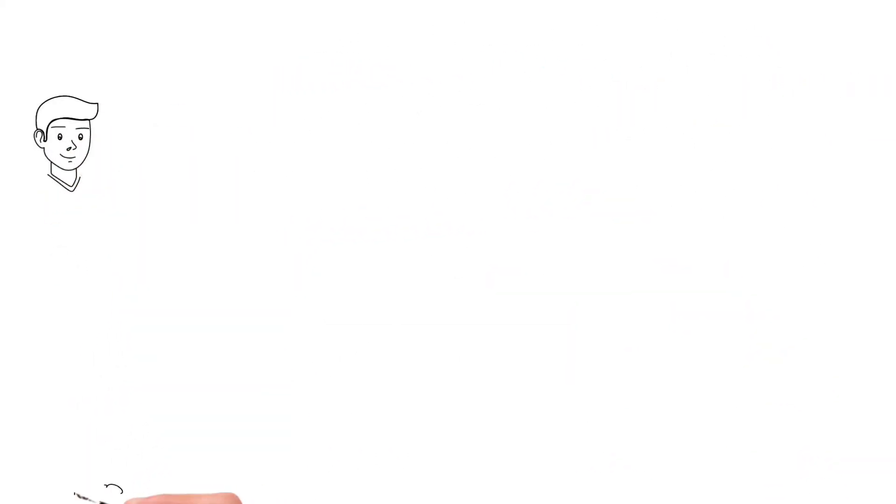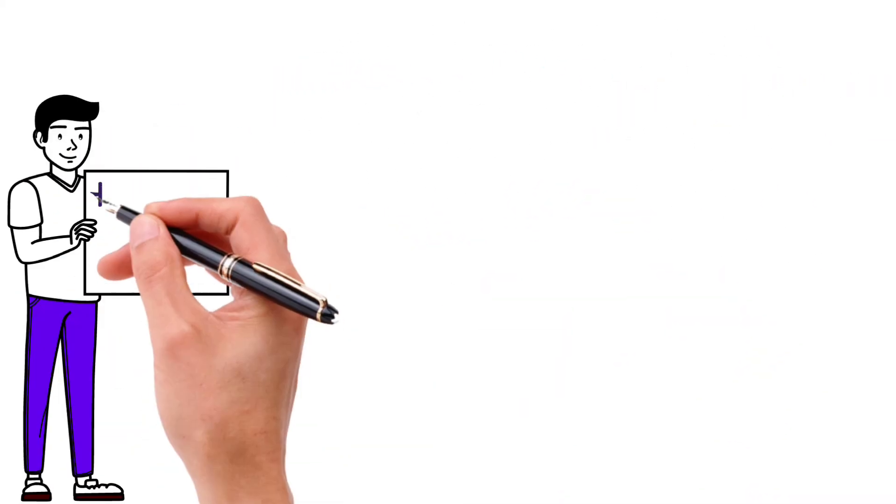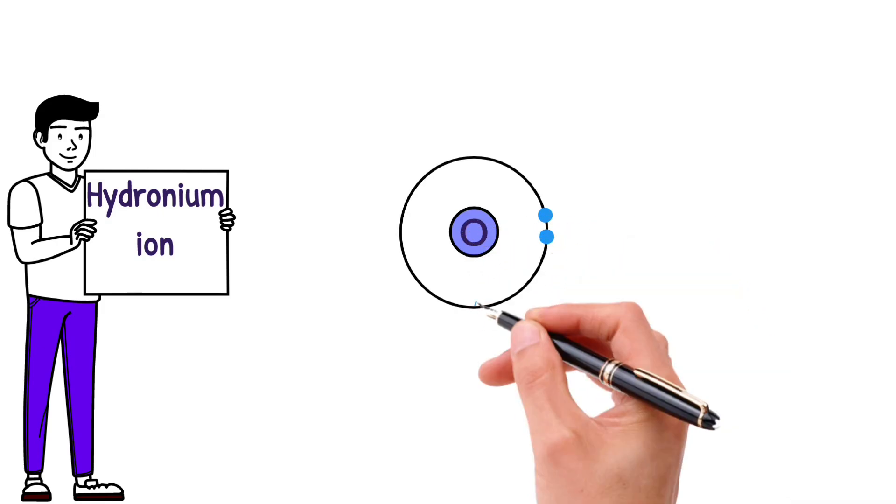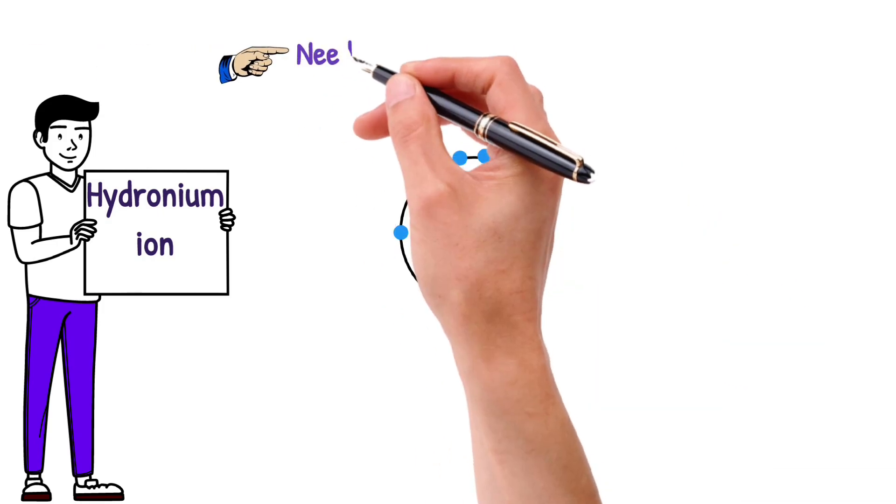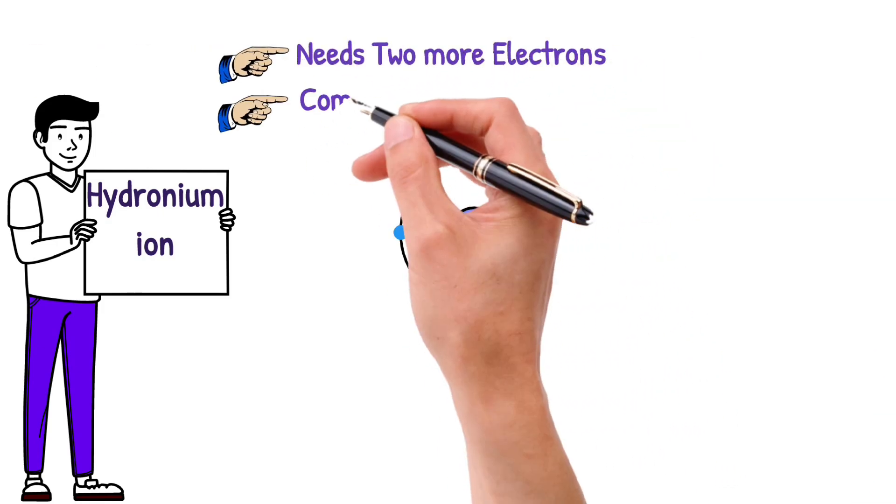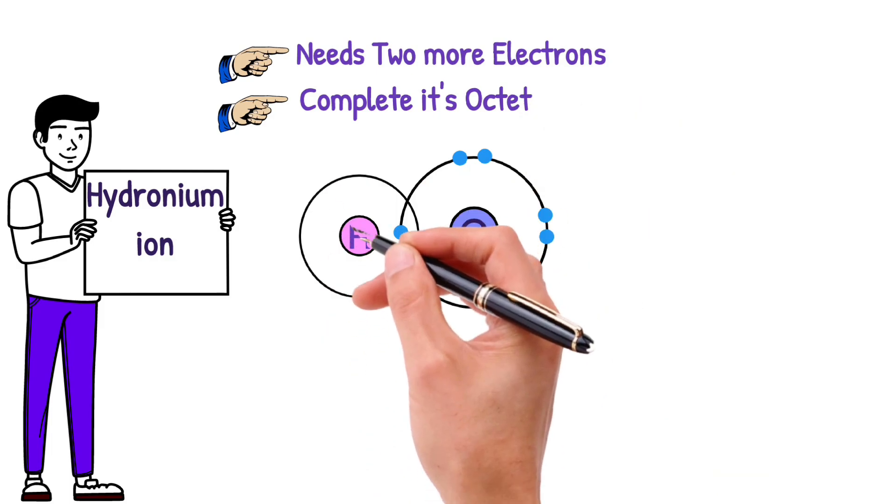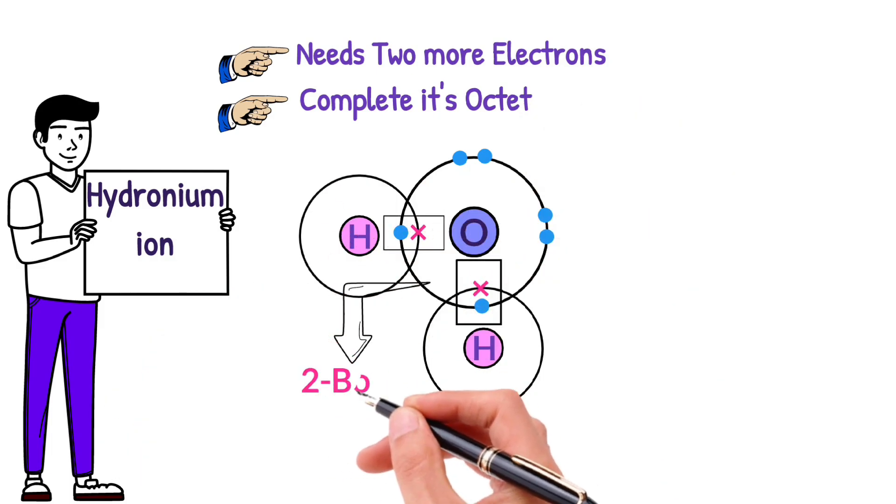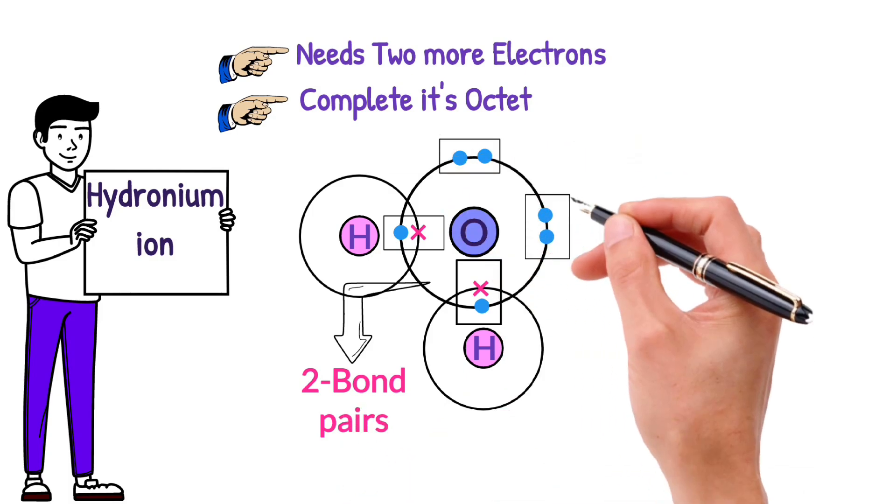Let's look at another example, the formation of a hydronium ion. We start with a water molecule. Oxygen has 6 valence electrons and it needs 2 more to complete its octet. So it shares 2 electrons with hydrogen atoms to become stable. Now the molecule of water has 2 bond pairs and 2 lone pairs of electrons.